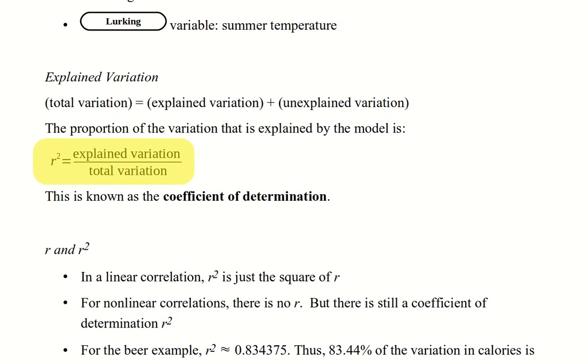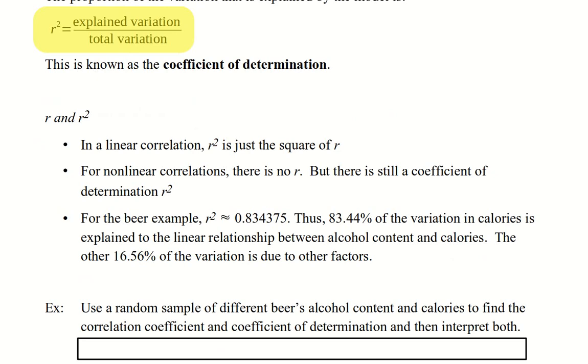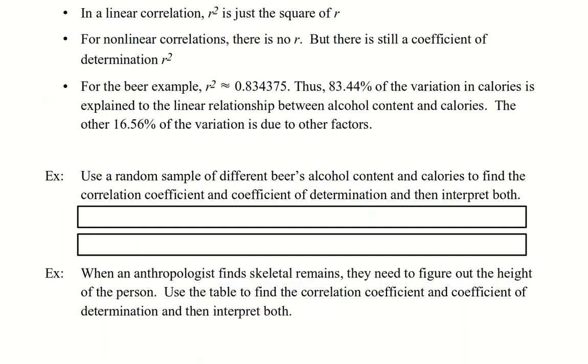Now, there is no r for nonlinear correlations, but there is still a coefficient of determination. Looking back at the calculator screenshots, you can see that for the beer example, r squared was 0.834375. Thus, about 83% of the variation in the calories in beer is explained by the linear relationship between alcohol content and calories. The other 16% of the variation is due to other factors.